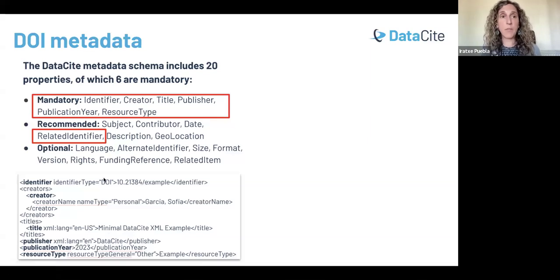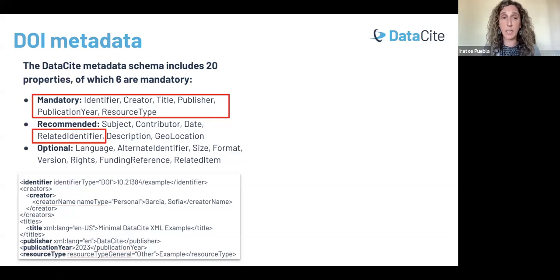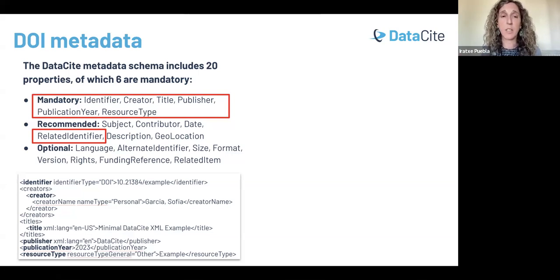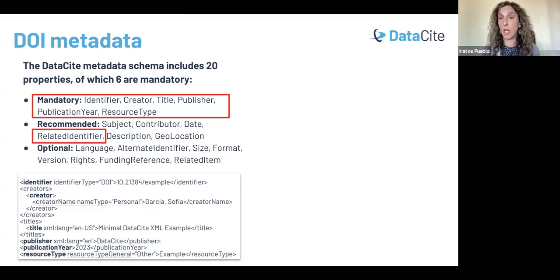I wanted to mention briefly how we handle the metadata for DOIs, which is also applicable to research data. We have a metadata schema that applies to all of the resource types we cover. This schema includes 20 properties — some are mandatory, others recommended and optional. The mandatory ones include the persistent identifier, the DOI for the object, but also the creators or authors, title, publisher, publication year, as well as the resource type.